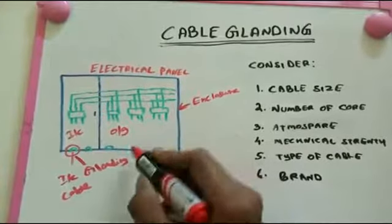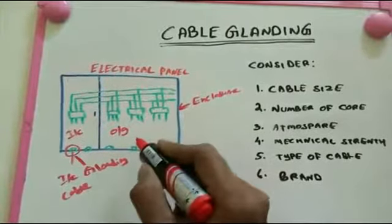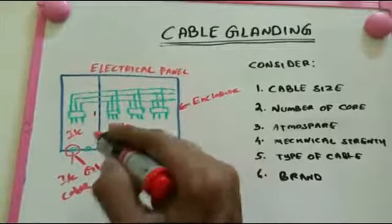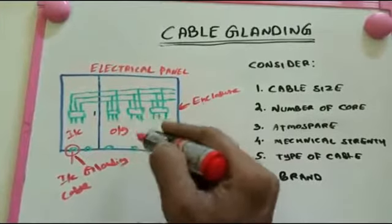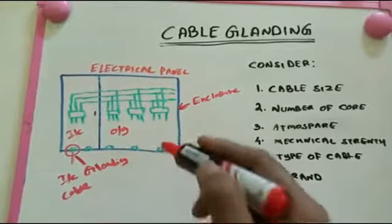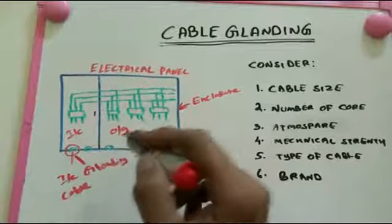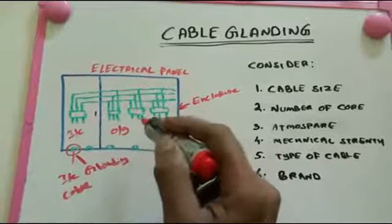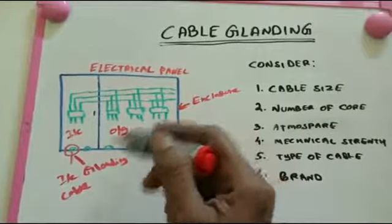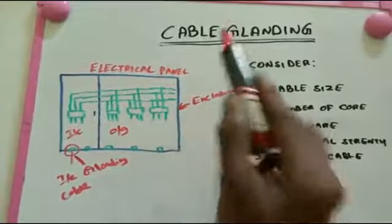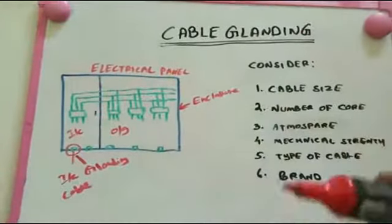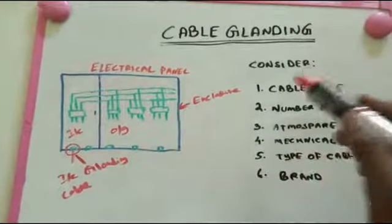Cable landing is very important for both incoming and outgoing. The first thing we need to do is the glanding, for the purpose of mechanical strength of the cable — that means mechanically securing the cable — and then proper termination and good efficiency termination of the cable inside the electrical panel.